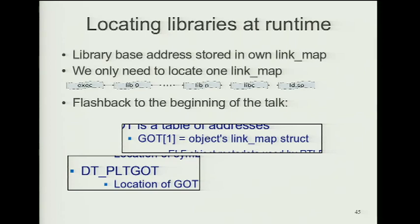We can also look up libraries at runtime without Turing completeness. The link map structure's address is stored in the GOT, and the GOT address is in the dynamic table. So from the very start, you know where to look up the link map structure that gives you access to the base address of every loaded library, since these structures contain base addresses of everything.